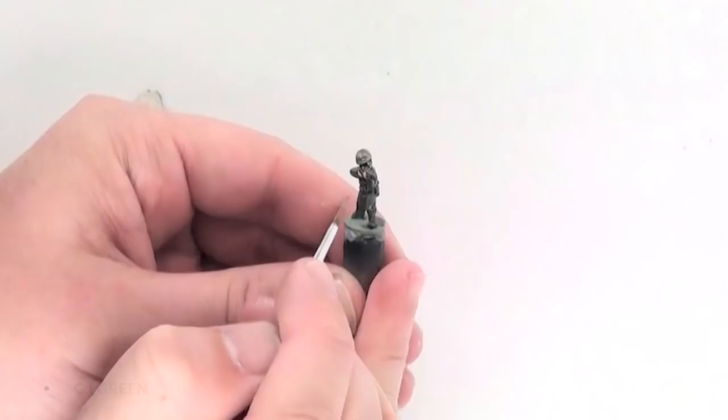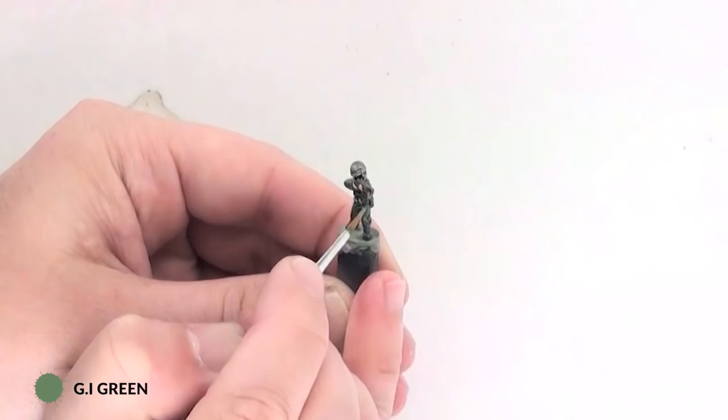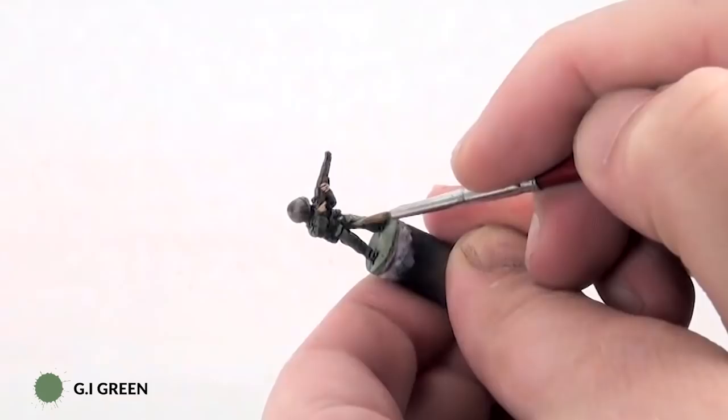So after I've highlighted the skin, the next thing I highlight is the uniform. This will allow me to go over any little mistakes I've made so far. And what I do here is I get the uniform color, GI Green, and I just paint it back on over the top.